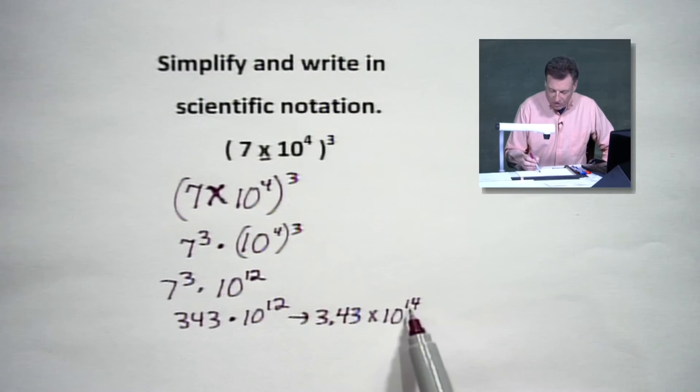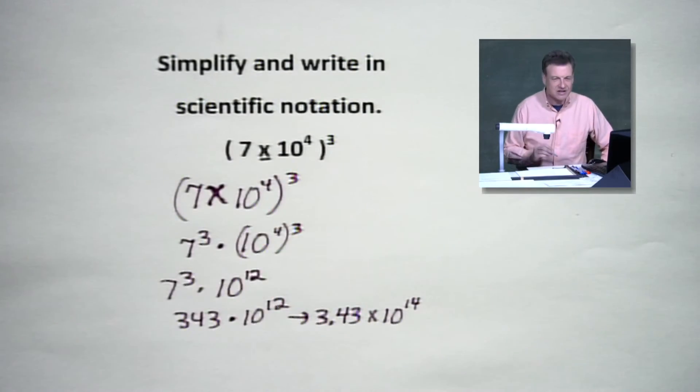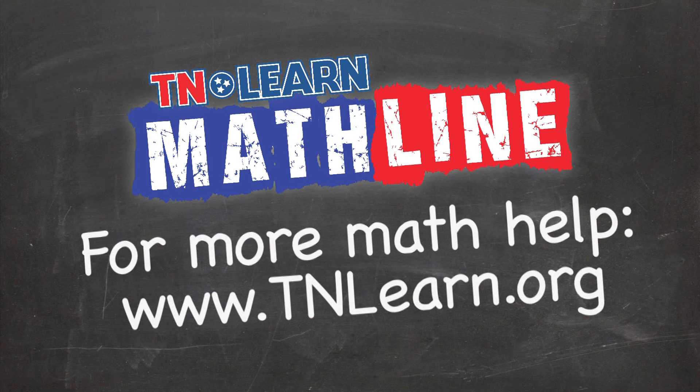Now, if you want to get that in standard form, it's a lot of zeros. But right now, all I asked us for is let's get the scientific notation, and that will be Life is Good. For more math help, visit tnlearn.org.